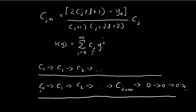If our chain of coefficients eventually stops at a certain point, we can take these coefficients and substitute them into this expression, and the v(y) we get will be a normalizable solution that satisfies the differential equation. This is the kind of behavior that we want.